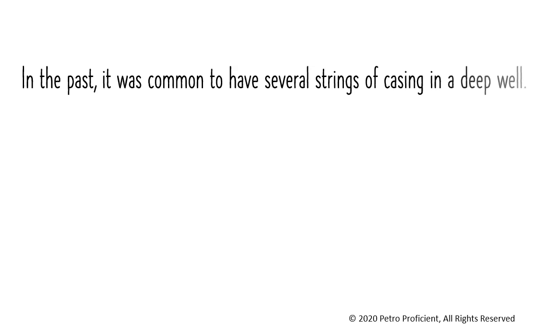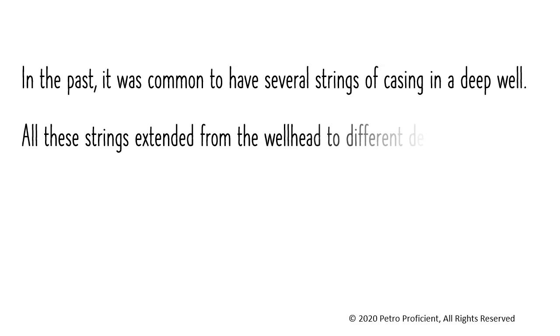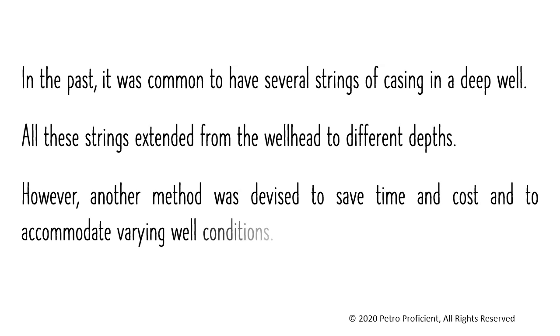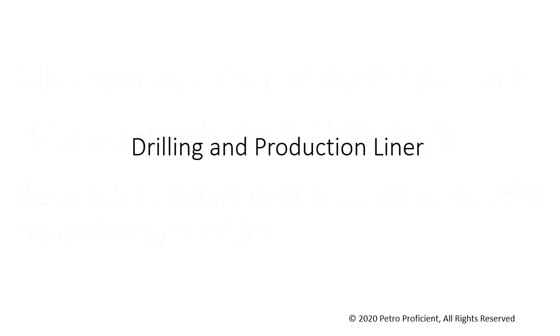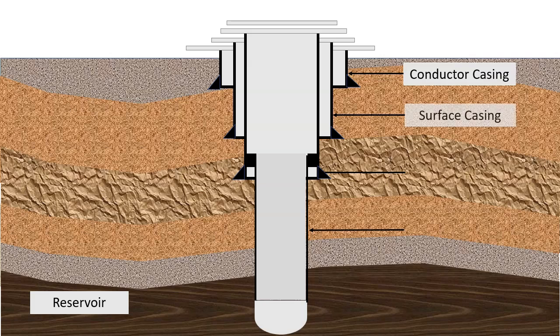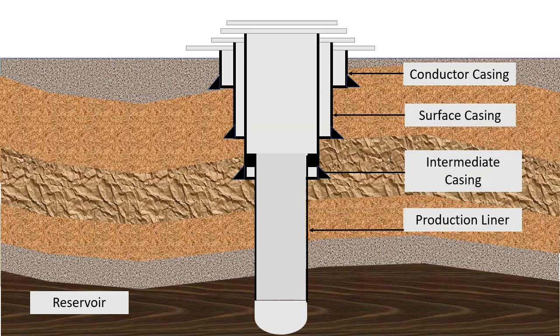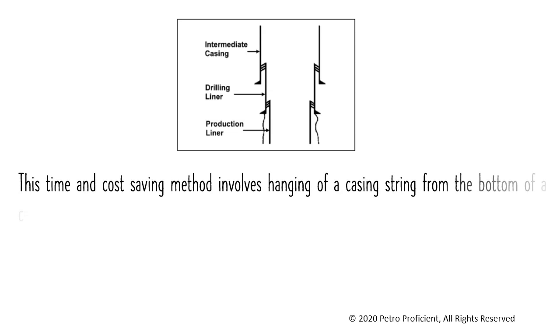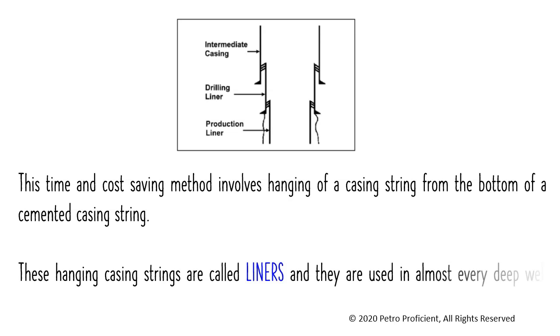In the past it was common to have several strings of casing in a deep well, all extending from the wellhead to different depths. However, another method was devised to save time and cost and to accommodate varying well conditions. This time and cost-saving method involves hanging a casing string from the bottom of a cemented casing string. These hanging casing strings are called liners, and they are used in almost every deep well completion.